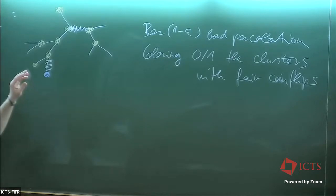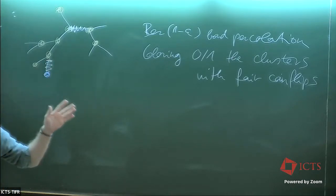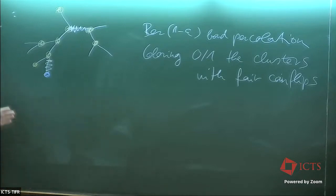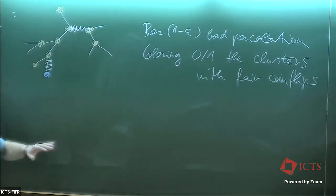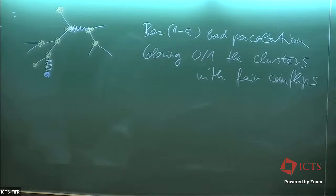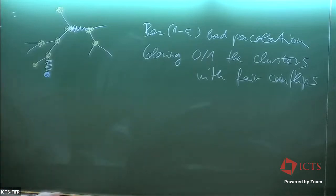Any invariant event has probability zero or one. We are on a Cayley graph, so invariant under the action of the group by translations on the Cayley graph. The event is on the colorings. It is mixing, but how do you prove it?